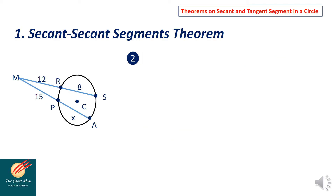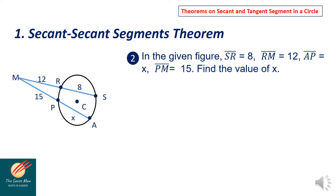Let us now move on to the second problem. In the given figure, SR equals 8, RM equals 12, AP equals X, PM equals 15. Find the value of X. We apply the same idea: SM equals SR plus RM, where SR equals 8 and RM equals 12, so SM equals 20.